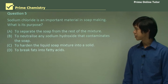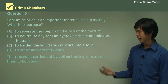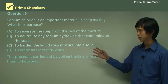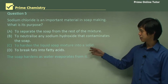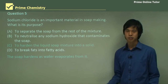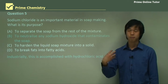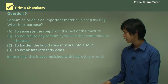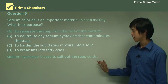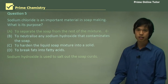Sodium chloride is an important material in soap making. What is its purpose? Well, it's not to break fats into fatty acids — that's done by boiling the fats or exposing them to steam. It's not to harden the liquid soap mixture into a solid, since the soap hardens as water evaporates. It's not to neutralise sodium hydroxide, as sodium chloride is a neutral substance. So the answer is A: sodium chloride is used to salt out the soap curds — to precipitate them out.